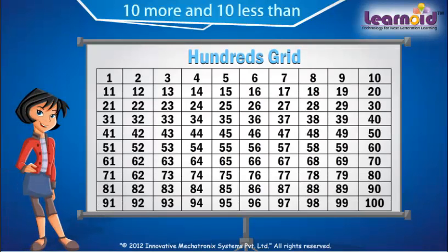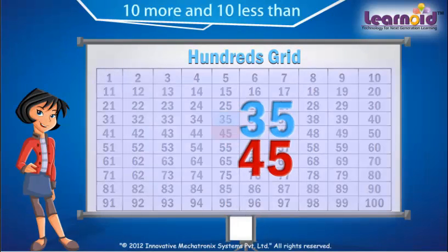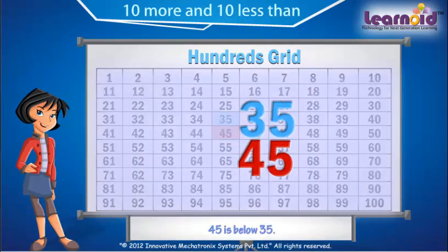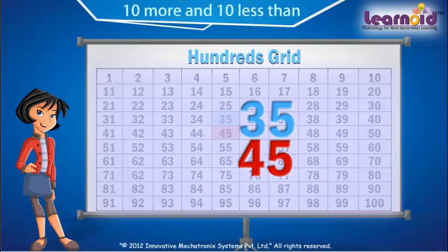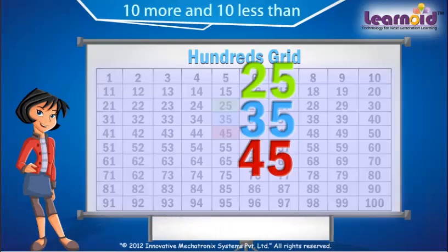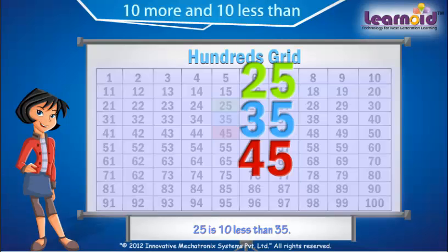Find the number which is 10 more than 35. The number which is 10 more than any number is always below that number in the hundreds grid. 45 is below 35, so 45 is 10 more than 35. 25 is above 35, so 25 is 10 less than 35.